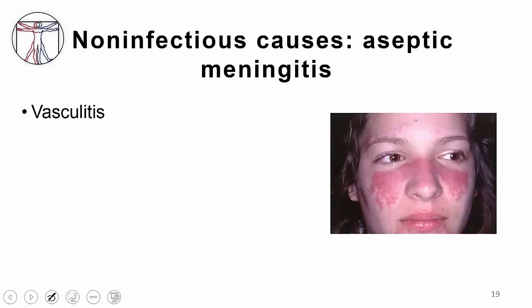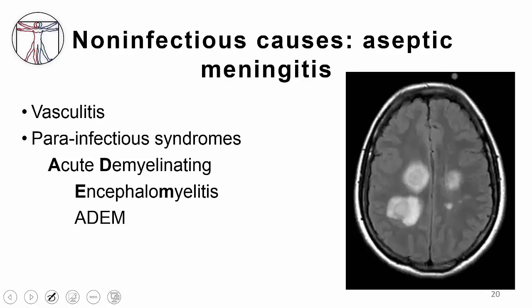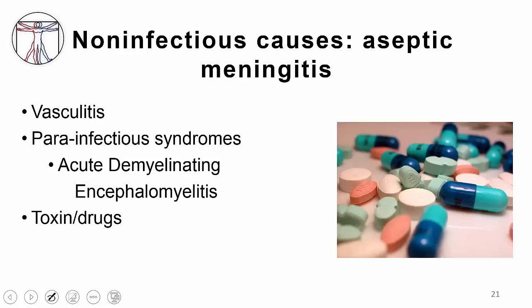Non-infectious causes of aseptic meningitis include autoimmune and demyelinating conditions. For example, a 14-year-old presenting with a week of worsening headache, stiff neck, and fever who has systemic lupus erythematosus — the vasculitis in her brain is causing aseptic meningitis. Another case is a 20-year-old woman with progressive left hemiparesis after a cold, showing asymmetric MRI lesions, treated with steroids with rapid improvement — she has acute demyelinating encephalomyelitis, or ADEM. Finally, don't forget to ask about medications: ibuprofen, certain antibiotics, and immunomodulators can cause aseptic meningitis.